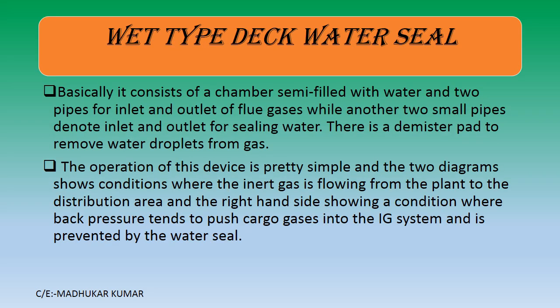We are going to see about the wet type of deck water seal. It consists of a chamber semi-filled with water, and two pipes for inlet and outlet of the flue gases. Another two small pipes are fitted for the inlet and outlet of the sealing water. There is also a demister pad on top which removes water droplets from the gas — meaning the IG passing through will be dried by the demister pads.